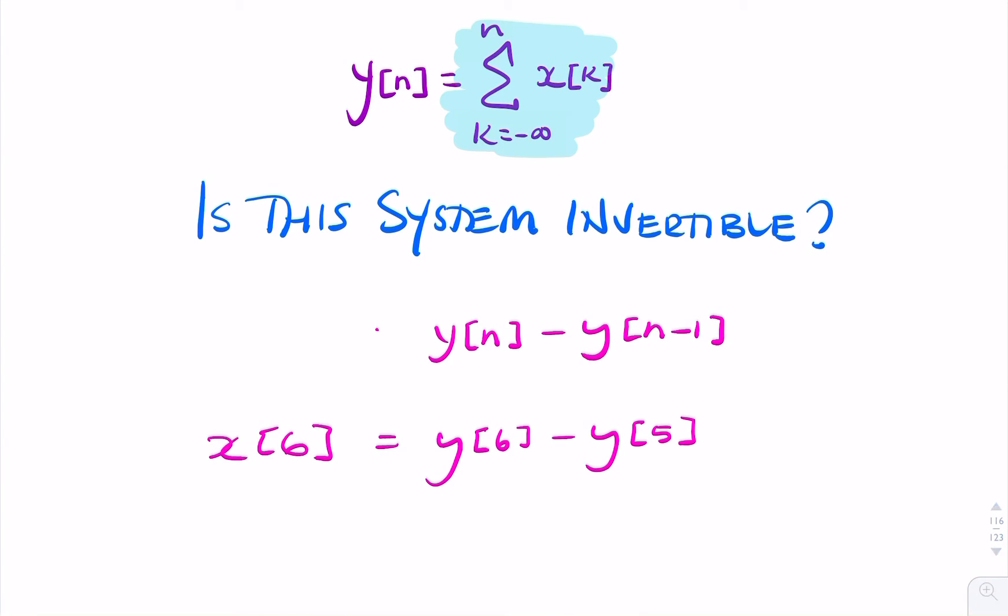So if you subtract y of n minus y of n minus 1, what you get is x of n. So actually, the system is invertible.